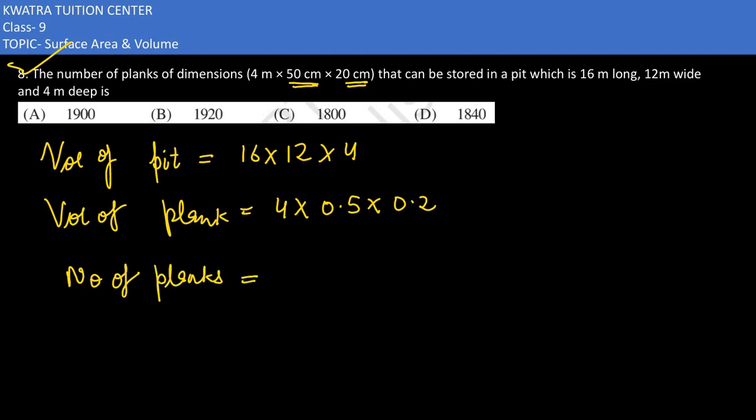The number of planks equals the volume of the pit divided by the volume of each plank.